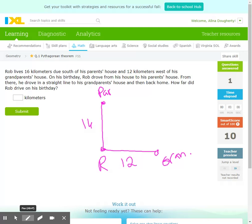On his birthday, Rob drove from his house to his parents' house. From there, he drove in a straight line to his grandparents' house and then back home. How far did he drive on his birthday? So he did this whole route. Rob went the 16 kilometers and whatever this is, C, and then back the 12. So this is a two-part question. We've got to find C and then we've got to find the perimeter. The perimeter is the distance all the way around.